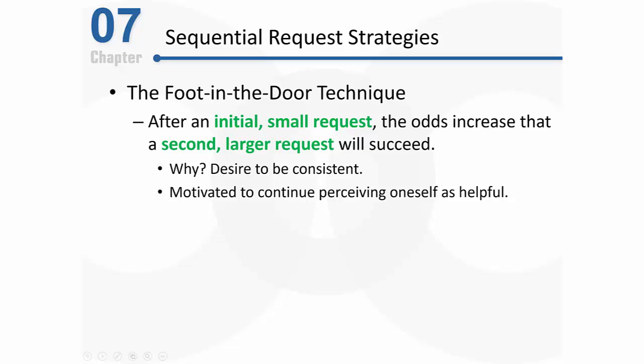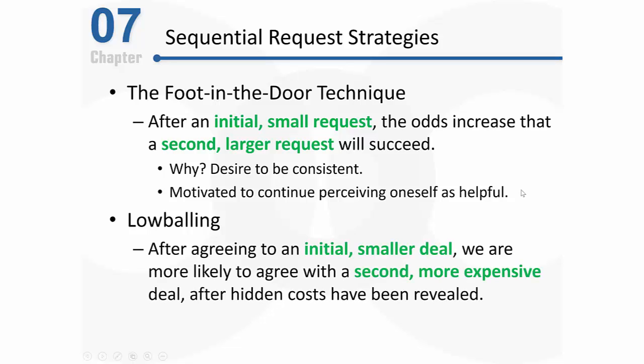With the foot-in-the-door technique, the person's requests shift from relatively small to relatively large. The same type of thing is working with low-balling — it's based on the same type of shift. The way low-balling works is that after someone agrees to some initial, relatively small deal, they're then more likely to agree to a second, more expensive deal after hidden costs or hidden fees are added.